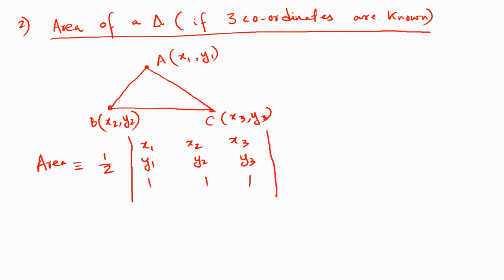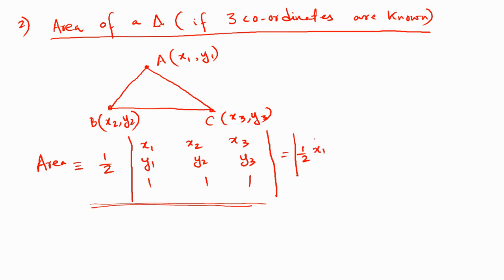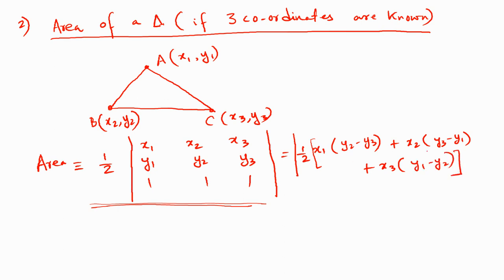For those who haven't covered determinants yet, the expanded formula is: Area = ½ × |x1(y2 - y3) + x2(y3 - y1) + x3(y1 - y2)|. The area is always positive, so we take the modulus. This is a pretty important expression — sometimes three coordinates are given and you need to find the area directly, or as part of a larger problem.